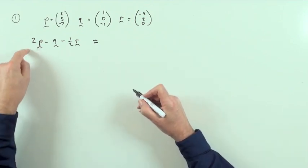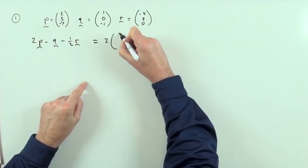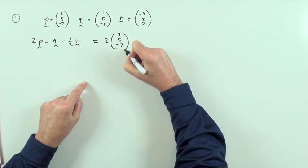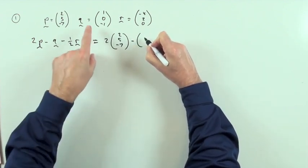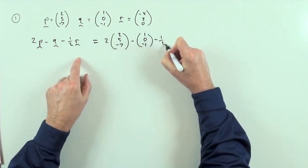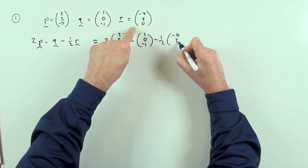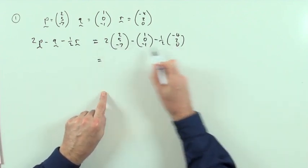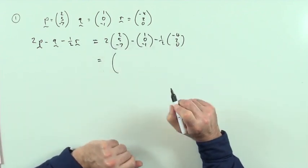So what have we got for this thing? It means you've got 2 lots of p, so that's 2 lots of (5, 2, -7), take away q, that's (1, 0, -1), and take away a half of r, which is (-4, 2, 0). That just means you've got three rows of calculations to do independently of each other.